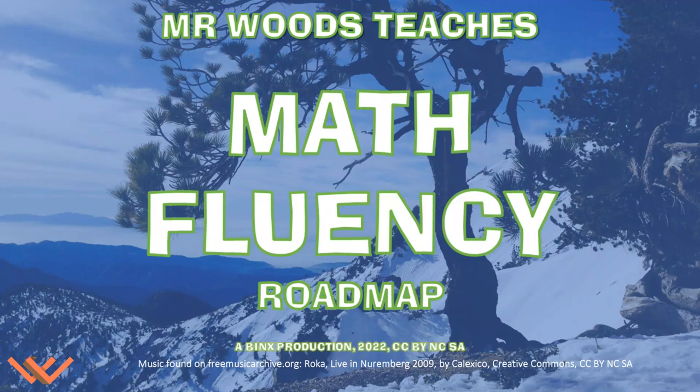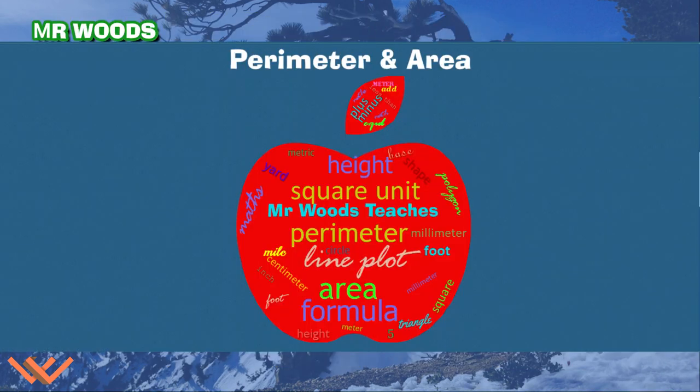Welcome to Mr. Woods Teaches. I'm Fred Woods, ready to teach. Hi fellow mathematicians, welcome to Mr. Woods Teaches. Today we're going to be working on perimeter and area. This is something that you get into when you're in fourth or fifth grade. We're going to talk about the formula, which is really exciting because this is when you start learning about formulas. And we're going to get to some practice problems as well. Let's take a look.